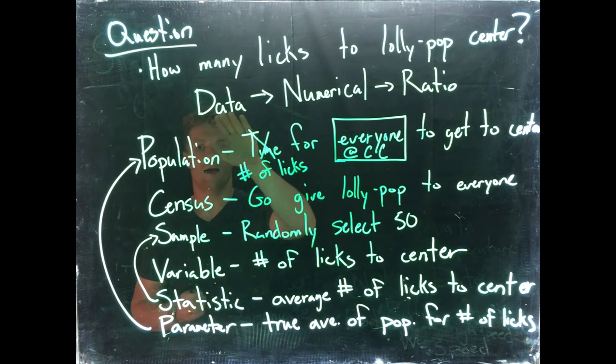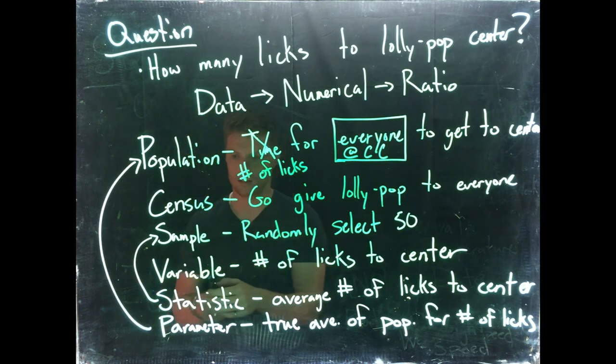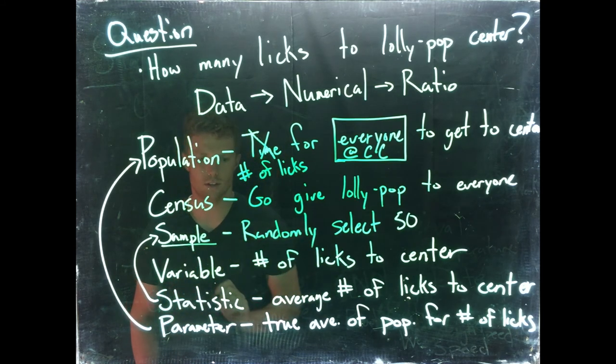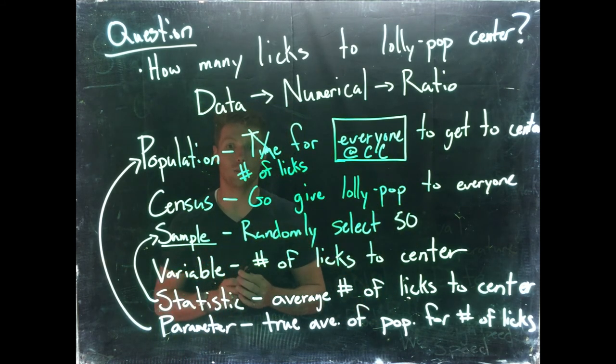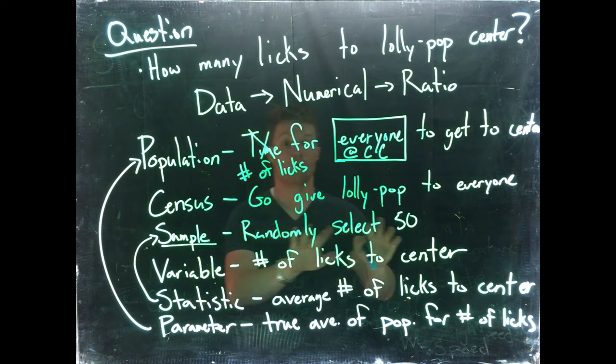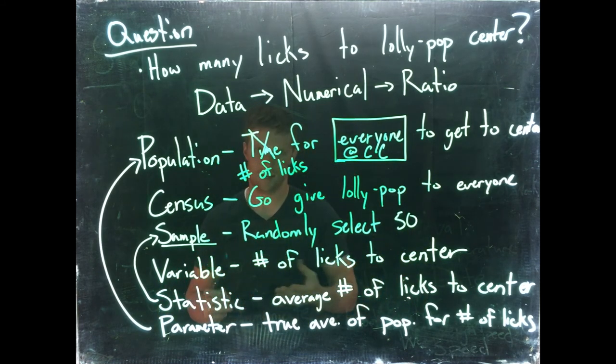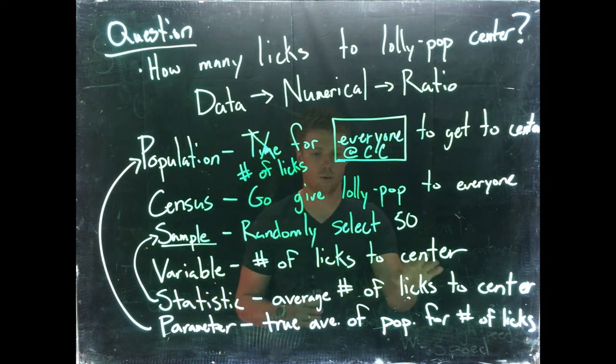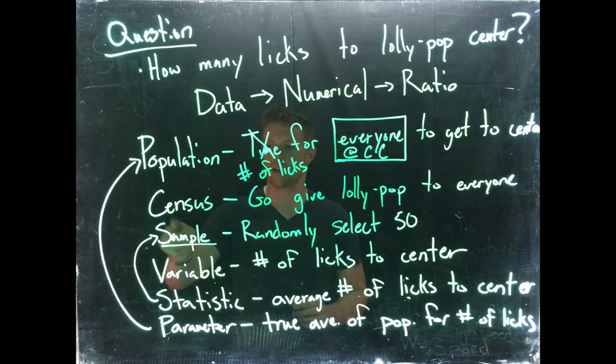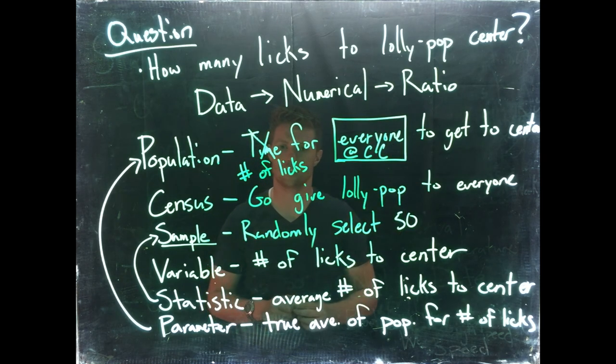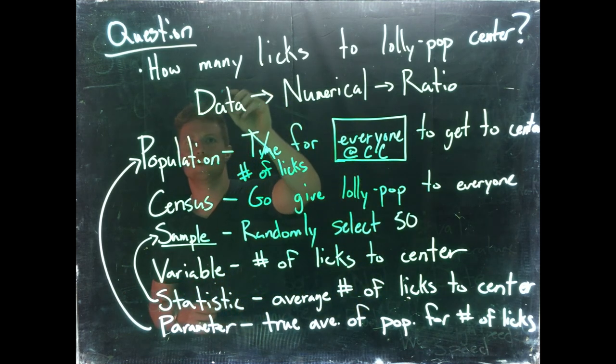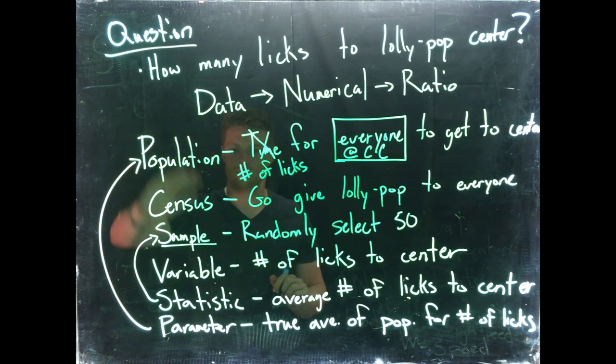Okay, so our data, if we did this, would be the collection of all of the people that we went out and sampled. The population would be everyone at CC. Census would be if we went and actually gave everyone a lollipop. The sample is if we randomly selected 50 and gave them the lollipop. Our variable would be this number of licks to the center. The statistic would be the average licks to the center as calculated from our sample, and the parameter would be the true average number of licks to the center of the lollipop. Hope that this helps out in helping us understand what's our data and some of these other vocab words.